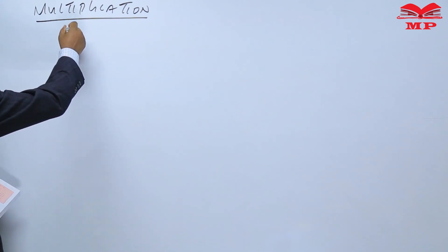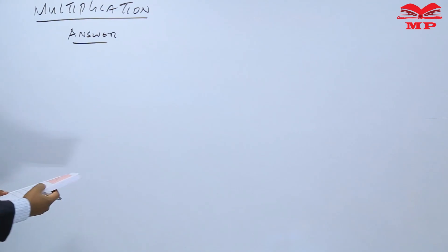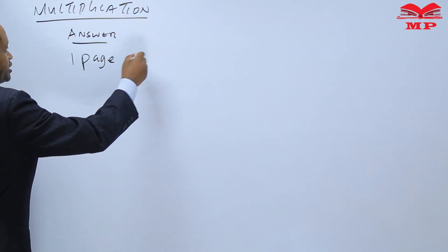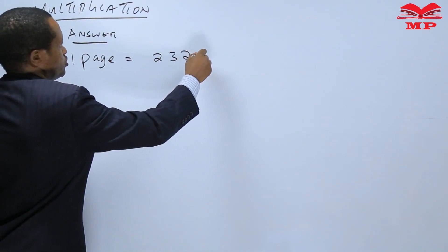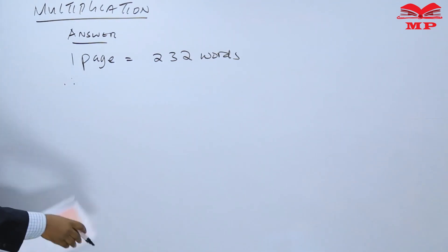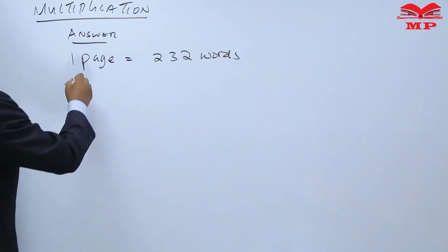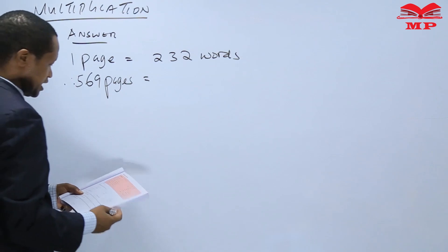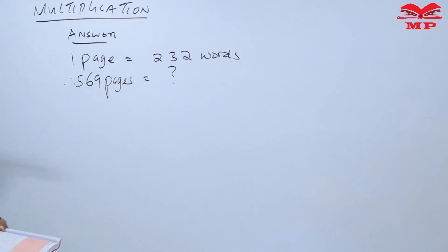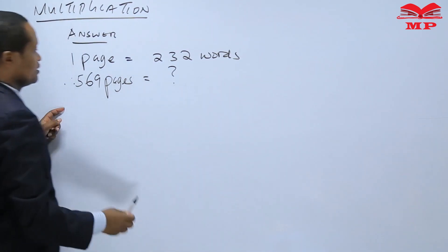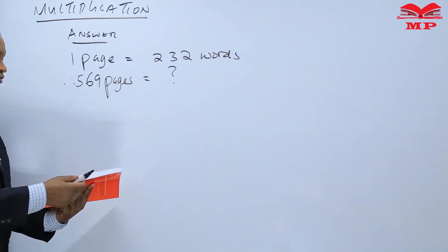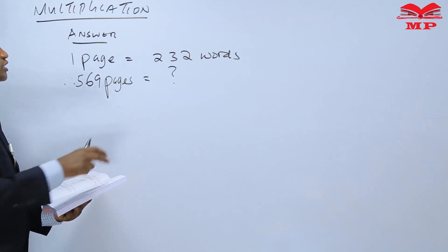The answer to that question: we are told in a book there are 569 pages, and each page has 232 words. So one page has 232 words. Therefore, for 569 pages, the question is how many words are there? It's like this book here — assume this is the book we are talking about. So just on page one, on one page, we are told there are 232 words.